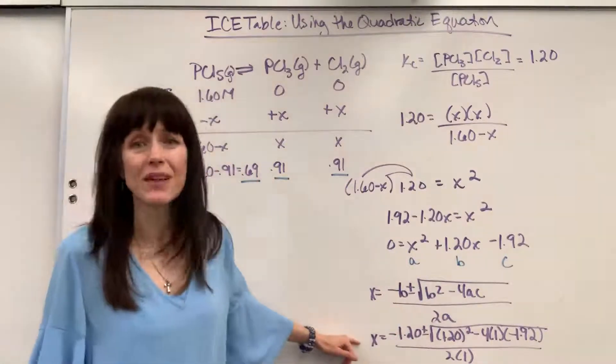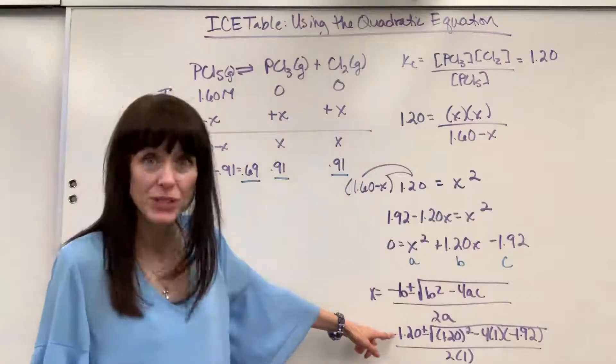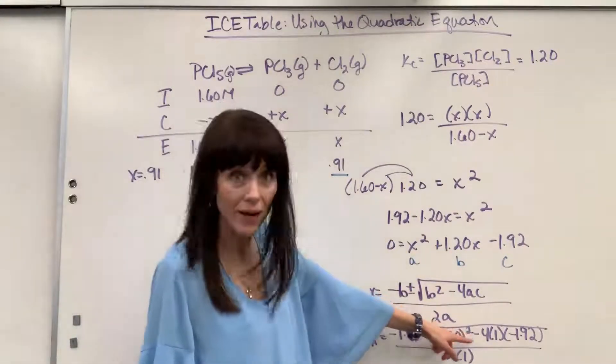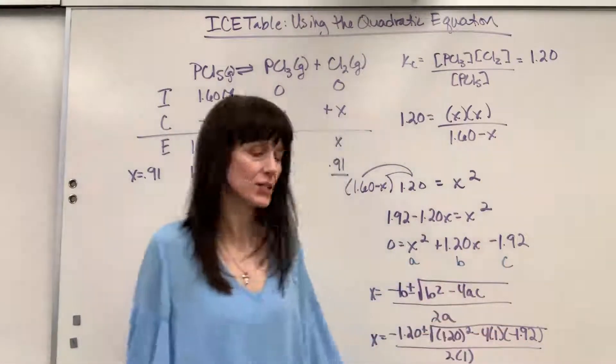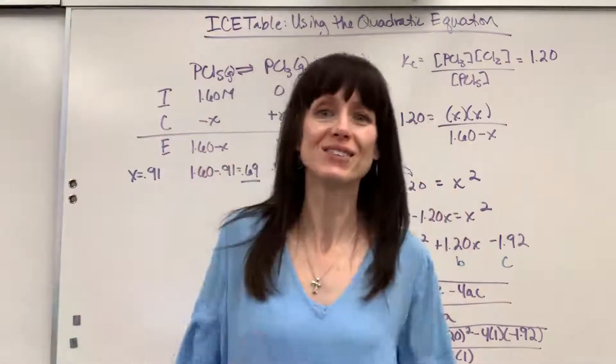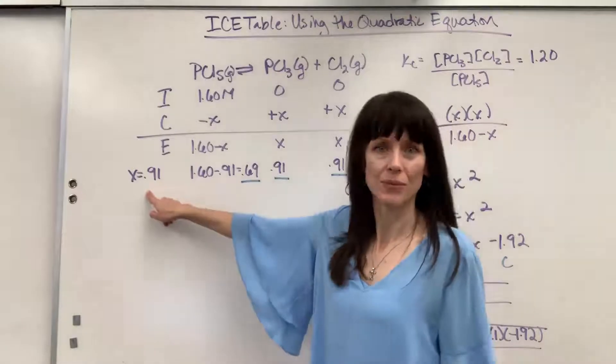So I just plugged in our numbers right here. So you have the minus 1.2, remember that's the B, right there, plus or minus square root of 1.2 squared, minus 4A is 1, C was negative 1.92, divided by 2A, that's 2 times 1. So plug all of that into your calculator, and you get X equals 0.91.